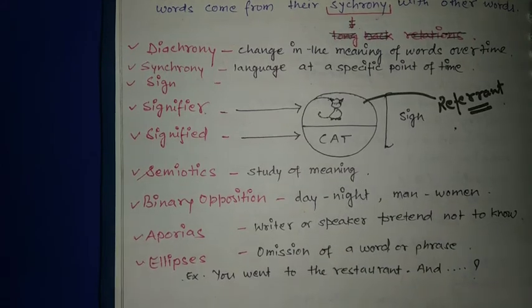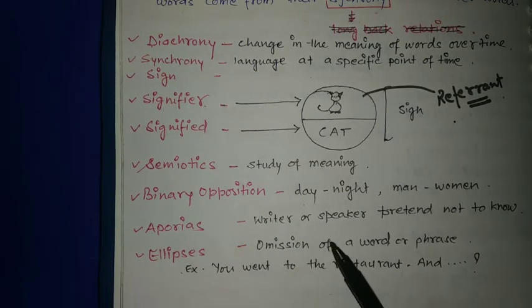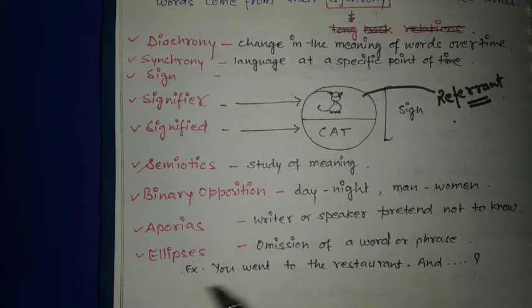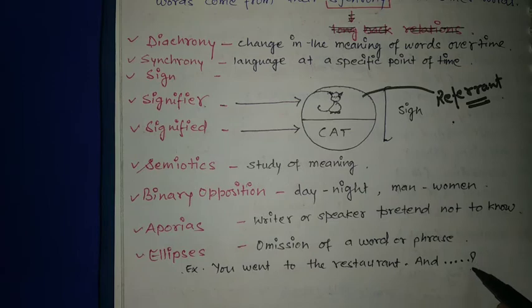Aporia is when a writer or speaker pretends not to know something. Ellipses is omission of a word or phrase at a place. For example, 'you went to restaurant and...' then there will be a pause or blank.